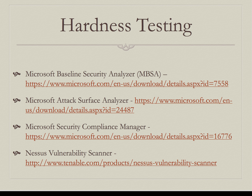To test the hardness or security of a system, we can use different tools. On this screen are various tools that are free and can be used to test whether the steps you've taken to harden your systems are working. Tools like the Microsoft Baseline Security Analyzer and the Nessus Vulnerability Scanner should be run against any new system before it moves from the testing environment to the production environment. I'll leave this up for a couple of minutes — copy these links and go take a look at these tools.